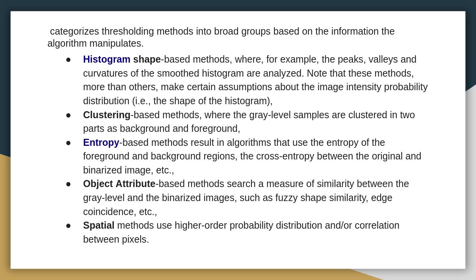The fourth method is the object attribute-based method, which searches for a measure of similarity between the gray level and binarized image, such as fuzzy shape similarity and edge coincidence. The fifth is the spatial method, which uses higher-order probability distribution and correlation between pixels.